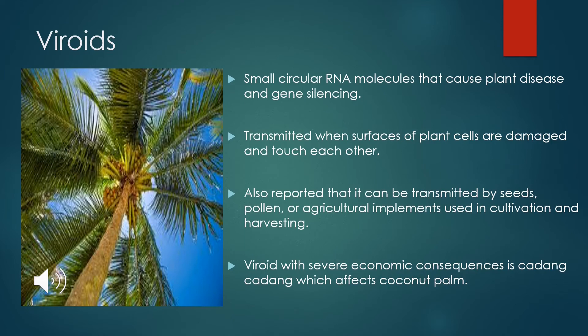Viroids are small circular RNA molecules and they are the smallest known infectious agents. They are responsible for disease of several crop plants, including potatoes and tobacco. They can enter the nucleus of an infected plant cell and interfere with the transcription of DNA into RNA, in a process known as gene silencing. Viroids can be transmitted in different ways, such as through seeds, pollen, and agricultural implements used in cultivation and harvesting. One viroid with severe economic consequences affects the coconut palm.